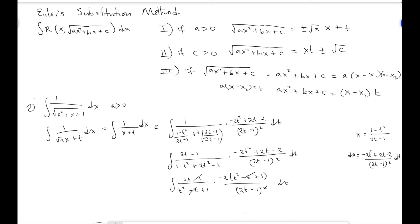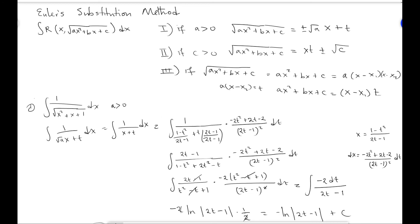The integral of −2 over (2t − 1) dt gives −2 · ln|2t − 1| · (1/2). The −2 and 1/2 cancel, leaving −ln|2t − 1| + C. That is our final answer.